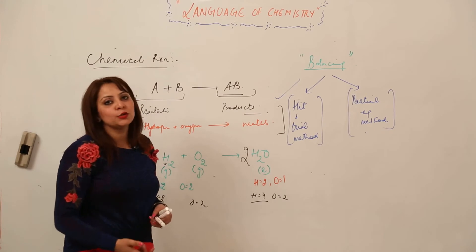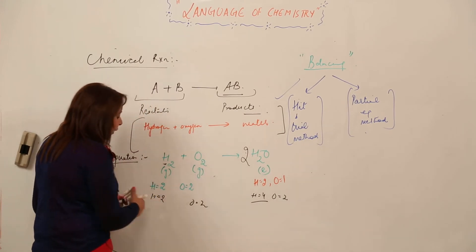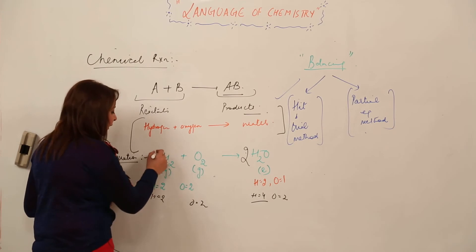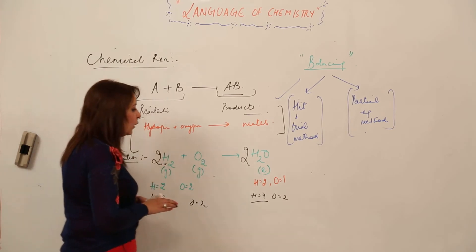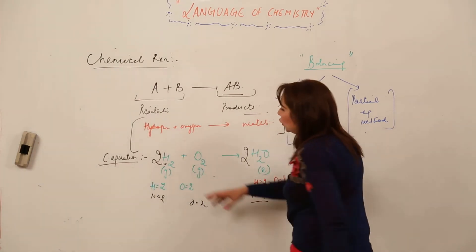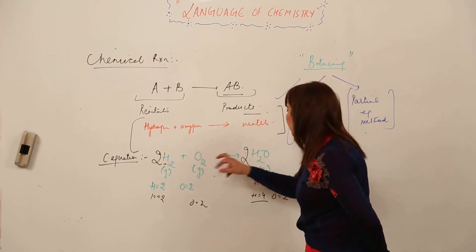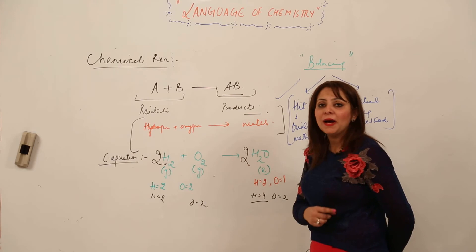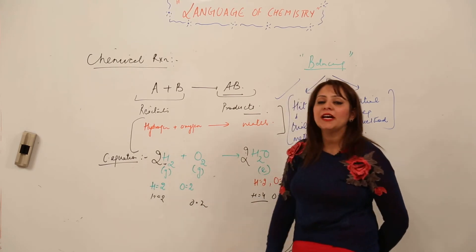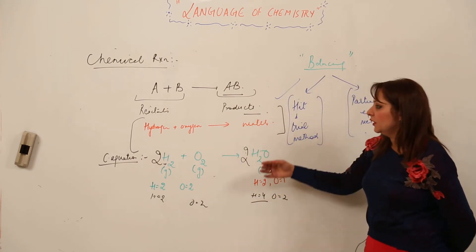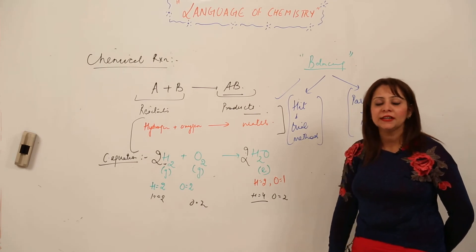We need to balance the hydrogen as well. We can make it 4 by multiplying with 2. Now checking again: 4 hydrogen, 4 hydrogen—balanced. 2 oxygen, 2 oxygen—balanced. This is the hit and trial method to balance a chemical reaction.